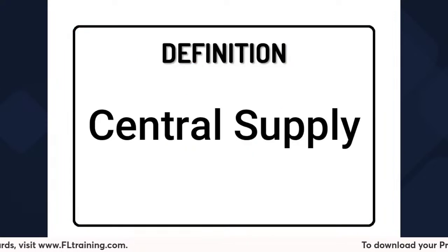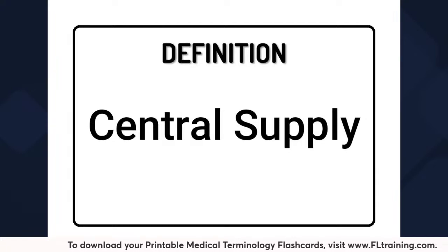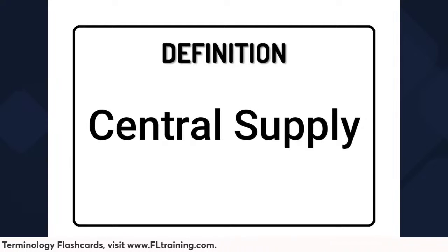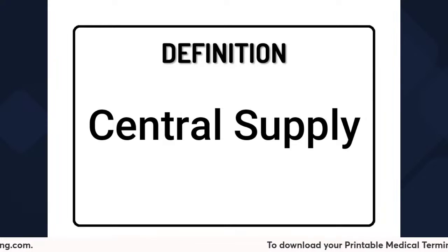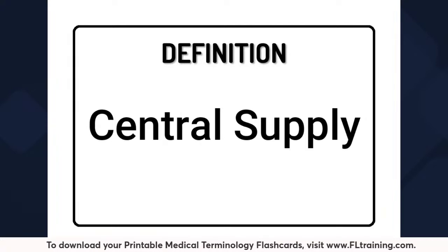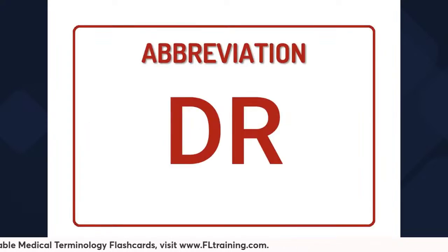C-S means central supply. In your hospitals, there's usually going to be an area where you can go and get equipment — that would be the central supply room. It's not on your floor; usually it's a separate area where you'll go and get specialized equipment and supplies that are not common to your floor or department.